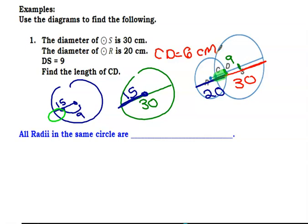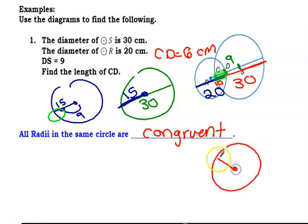We actually didn't need that 20 after all, because this little section was 10. All radii in the same circle are congruent — because if you're at the center going to the outside, that distance equals that, which equals that, which equals that. All of them are the same distance going from the center to the edge. In order to make a circle, all of the radii have to be congruent to make that perfect shape.